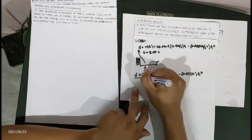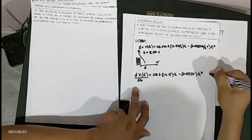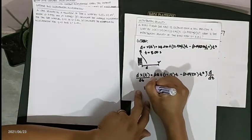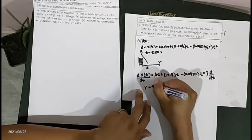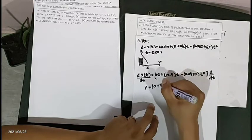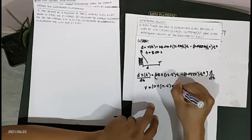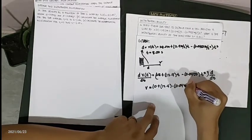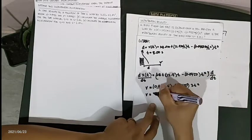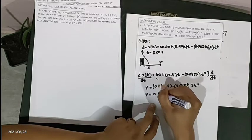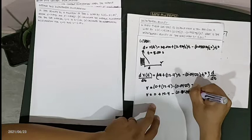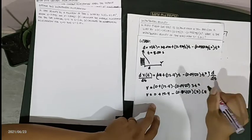We take the derivative of the equation. The derivative of the constant 28 is 0. The derivative of the term with t to the power of 1 gives the coefficient, so we get 12.4. Minus the constant 0.0450, and the derivative of t cubed is 3t squared. So velocity equals 0 plus 12.4 minus 0.0450 times 3 times t squared.